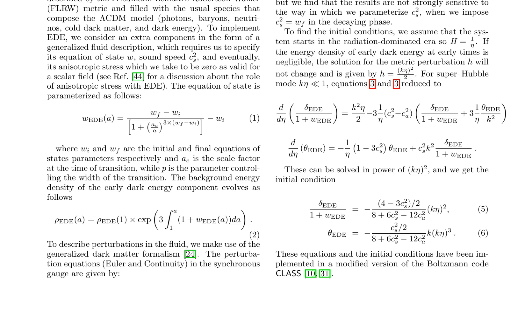The authors implement the equations and initial conditions in a modified version of the Boltzmann code class. Assuming the system starts in the radiation-dominated era with negligible early dark energy density at early times, they obtain the initial conditions delta EED times (1 plus W_EED) equals (4/3 C squared s over 2 minus 8 plus 6 C squared s over 12 C squared a) times k squared eta cubed.